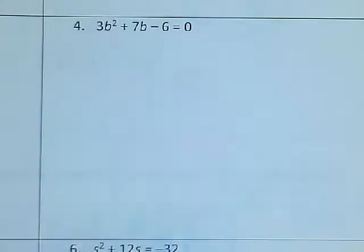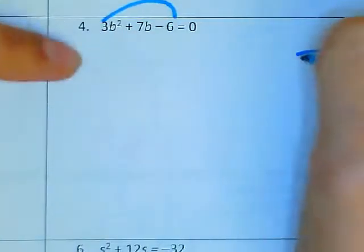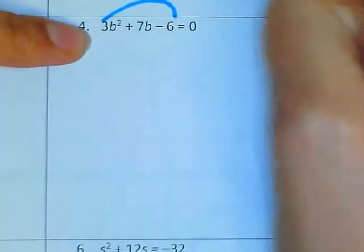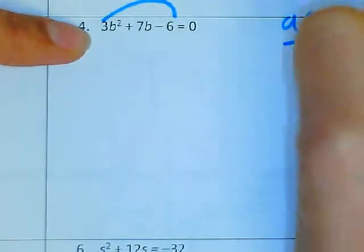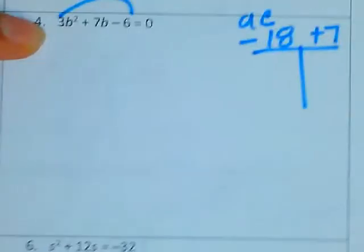This is number 4 of your worksheet to use the zero property. I'm going to factor first, so that's going to be AC, which would be negative 18, and 7 would be my B.